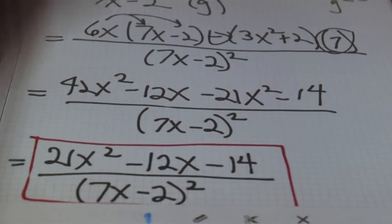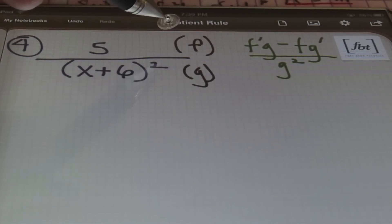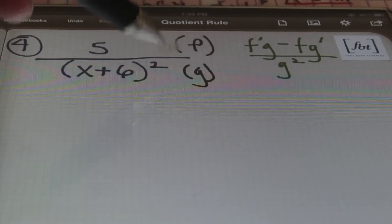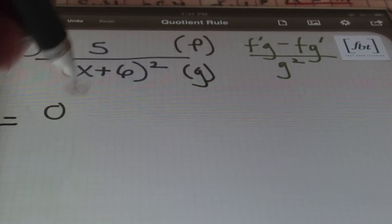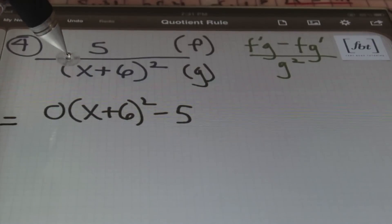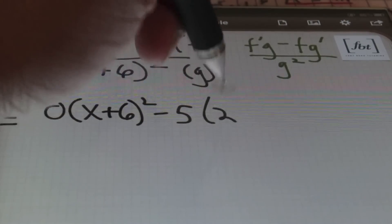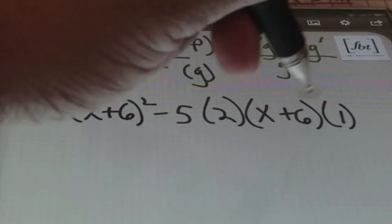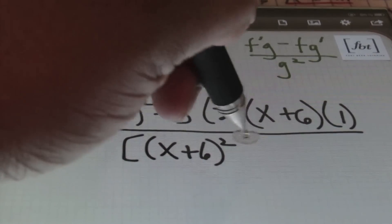On to problem number 4. I have 5 divided by the quantity (x + 6) squared. The numerator is labeled F and the denominator G. Using the quotient rule — F'G minus FG' over G squared — the derivative of the numerator is zero times the denominator (x + 6) squared, minus the numerator 5, times the derivative of the denominator. Since the denominator is a quantity raised to a power, I use the chain rule: the derivative is 2 times (x + 6) times 1 (the derivative of the inside), all over the denominator squared, which is (x + 6) squared, and I square that entire expression.